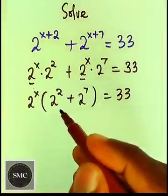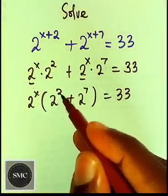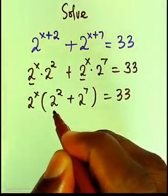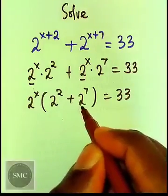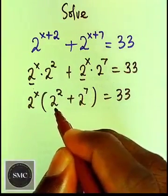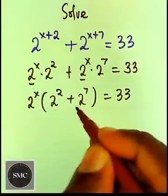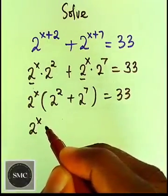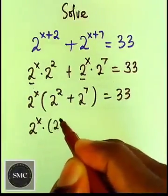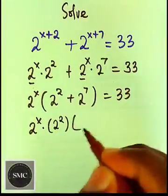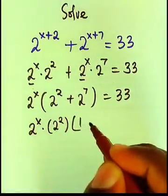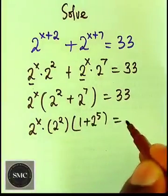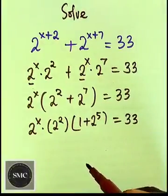Instead of getting the value of 2 to power 2 plus 2 to power 7 directly, I'm going to factorize further. We have 2 to power 2 here and 2 to power 7 here, so 2 to power 2 is also a common factor. Taking out 2 to power 2, inside we have 1 plus 2 to power 5, equals to 33.